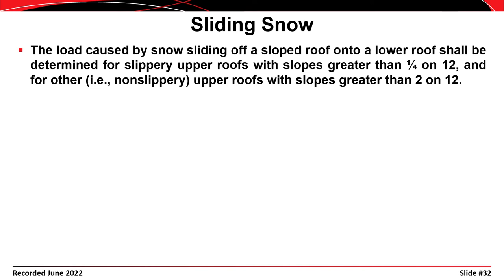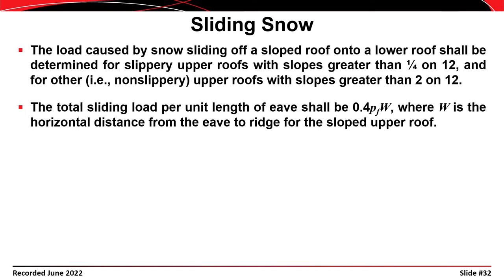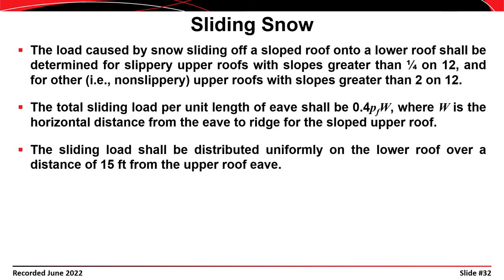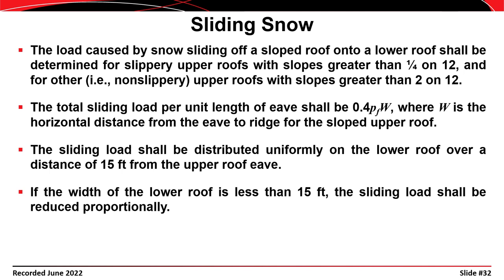The potential exists for snow to slide off of other roof sections onto a lower roof. The load caused by snow sliding off a sloped roof onto a lower roof shall be determined for slippery upper roofs with slopes greater than a quarter inch per foot, and for other non-slippery roofs with slopes greater than two inches per foot. The total sliding load per unit length of eave shall be 0.4 times P_F times W, where W is the horizontal distance from the eave to the ridge for the sloped upper roof. The sliding load shall be distributed uniformly on the lower roof over a distance of 15 feet from the upper roof eave. If the width of the lower roof is less than 15 feet, the sliding load shall be distributed proportionally.